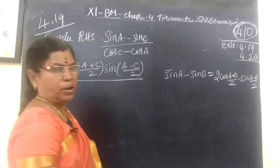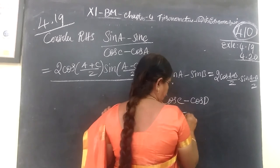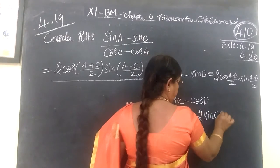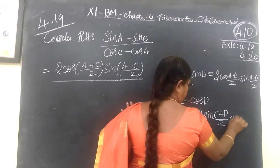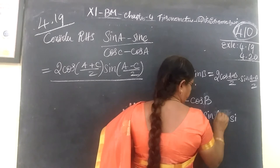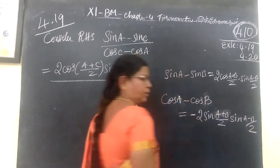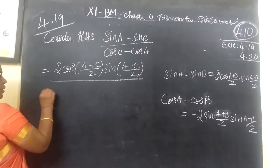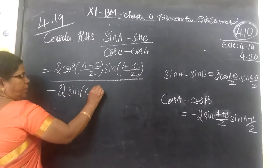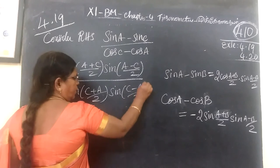The next formula is cos C minus cos D. Using that formula: the denominator becomes 2 sin of (A plus B)/2 into sin of (A minus B)/2. So applying both formulas, the numerator gives 2 cos of (A plus C)/2 into sin of (A minus C)/2.